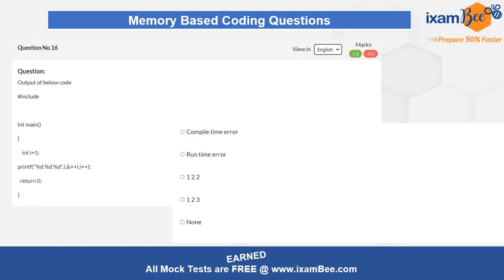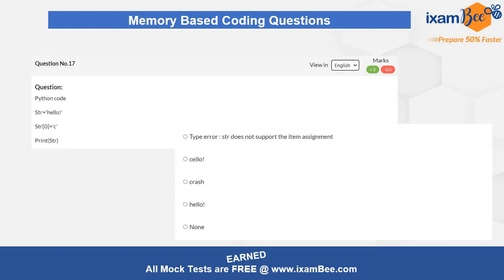Question number 16 is again a code-based question — you are given a print statement to test your understanding of increment and decrement operators. Determine whether the code compiles correctly or produces a compile-time or runtime error and answer accordingly. Question number 17 is a Python input/output question — understand the simple Python code and identify what the correct output will be.